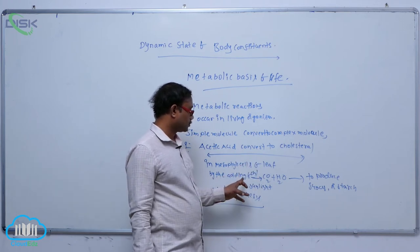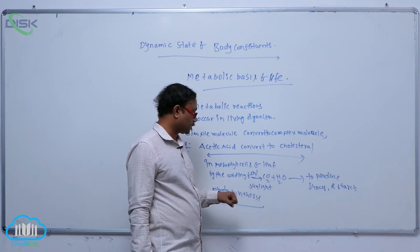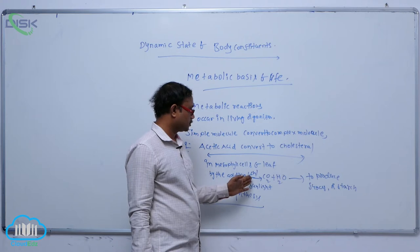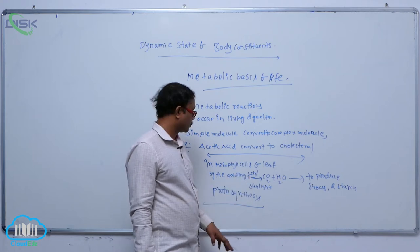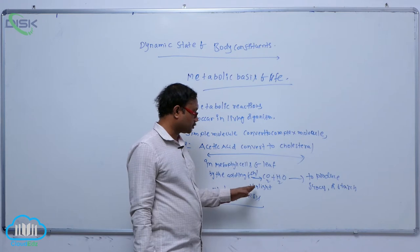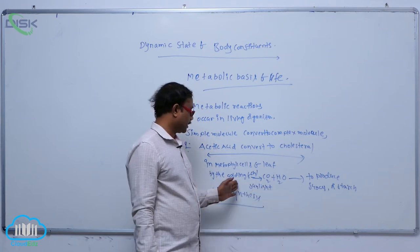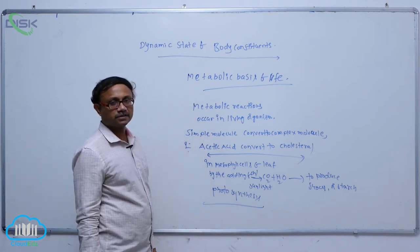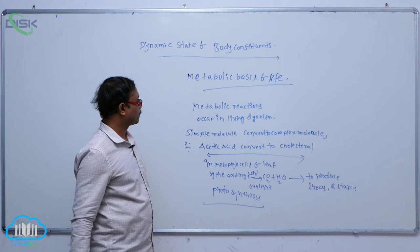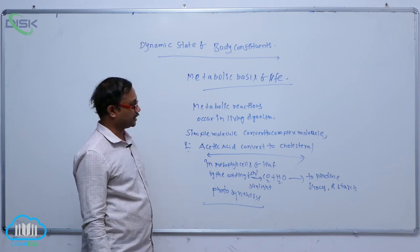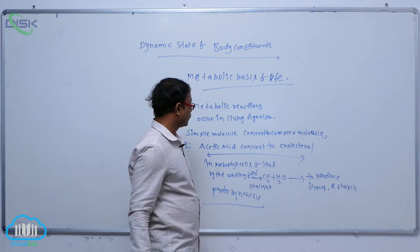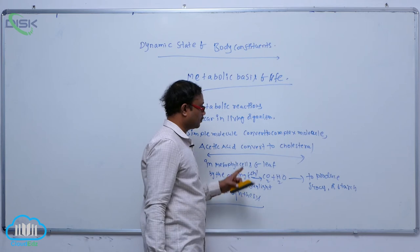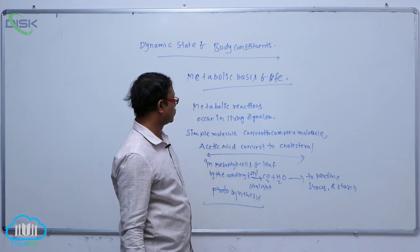In mesophyll cells of a leaf, by the addition of carbon dioxide plus water, sucrose or starch is produced in the presence of chlorophyll and sunlight. In this process, carbon dioxide is reduced to carbohydrate by the addition of water. This is known as the photosynthesis process. All these processes are metabolic reactions where simple molecules are converted to complex molecules.